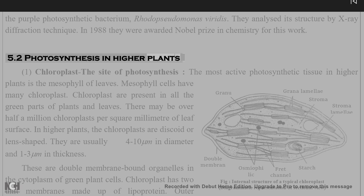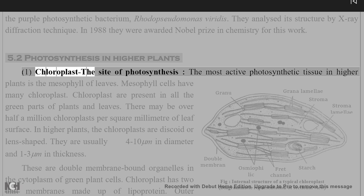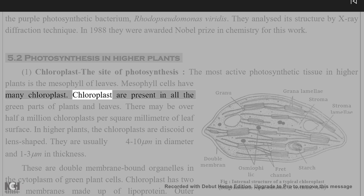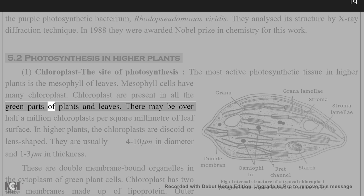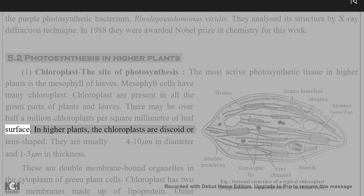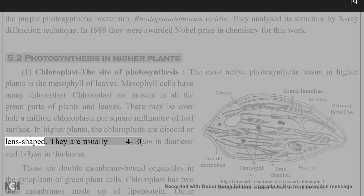Photosynthesis in higher plants occurs in chloroplasts. The most active photosynthetic tissue in higher plants is the mesophyll of leaves. Mesophyll cells have many chloroplasts, which are present in all the green parts of plants. In leaves, there may be over half a million chloroplasts per square millimeter of leaf surface. In higher plants, chloroplasts are discoid or lens-shaped, usually 4 to 10 micrometers in diameter and 1 to 3 micrometers in thickness.